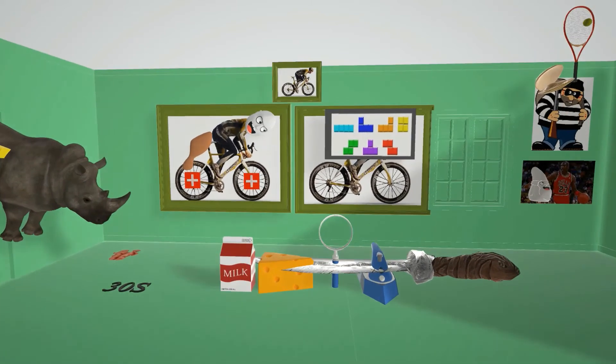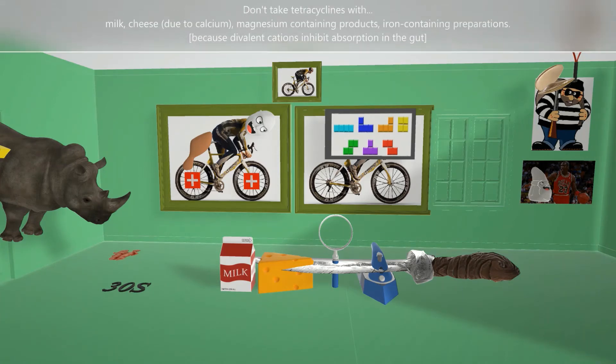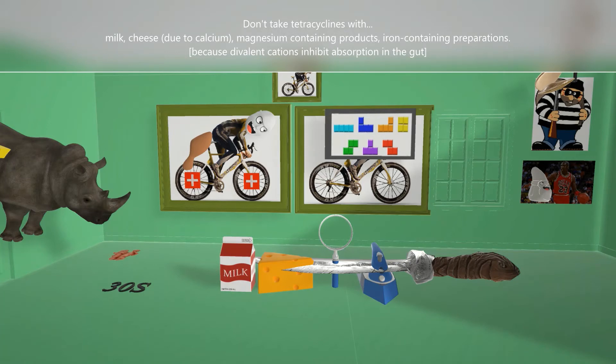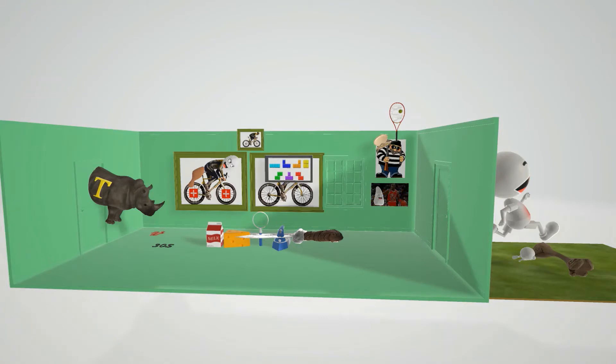We note someone stuck a knife through these things to remind us that tetracyclines should not be taken with certain things. First is milk—tetracyclines should not be taken with milk nor with other products that have calcium such as cheese, nor with products containing magnesium such as antacids represented by the magnifying glass, nor with iron containing preparations. This is because divalent cations inhibit the drug's absorption in the gut.